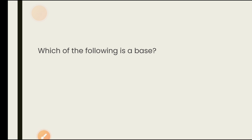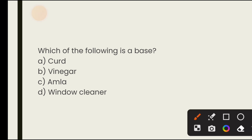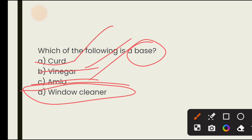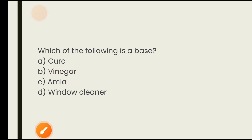Which of the following is a base? Options are curd, vinegar, aamla, window cleaner. Bases have a bitter taste and acids have a sour taste. Curd is sour, vinegar is sour, aamla is sour — all are acids. Window cleaner, like soap and detergent, produces lather and is used for cleaning, which makes it a base. The answer is window cleaner.